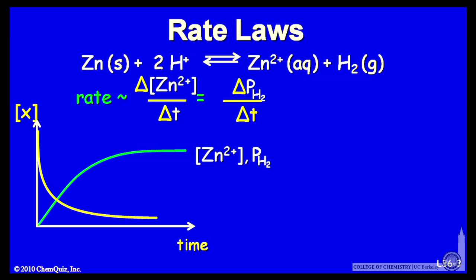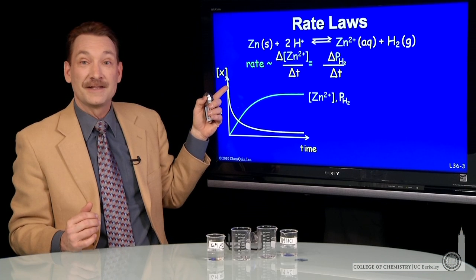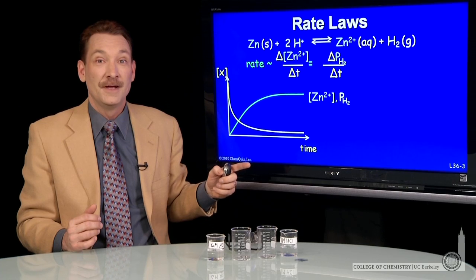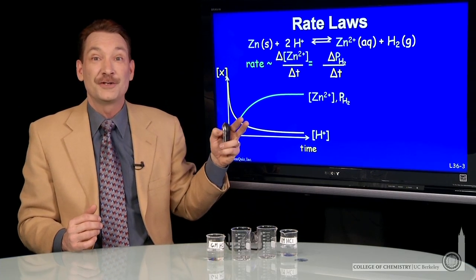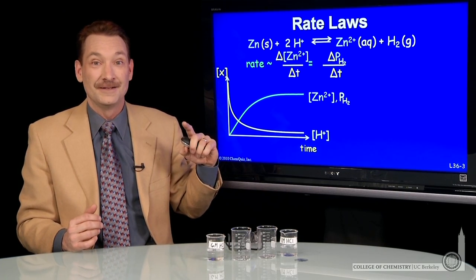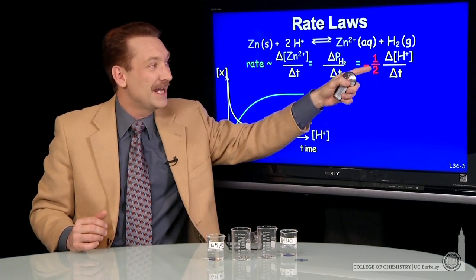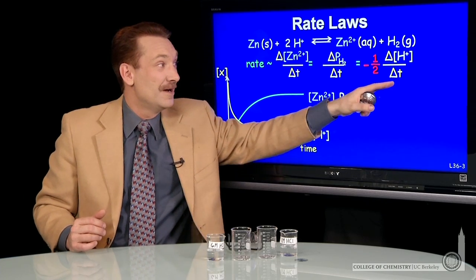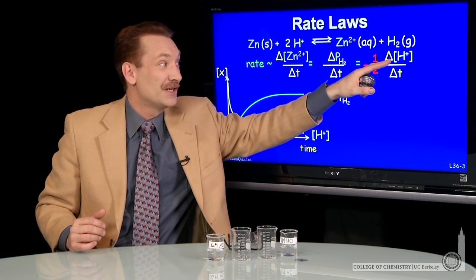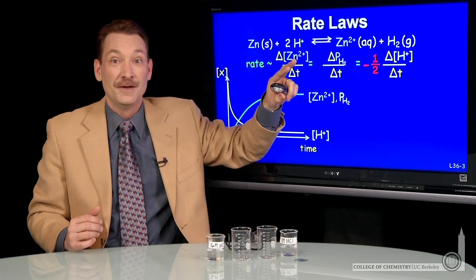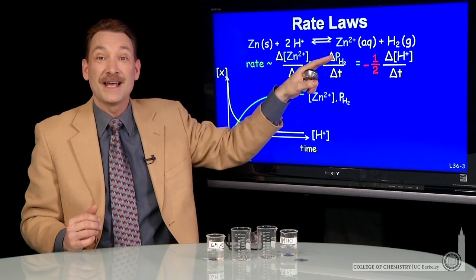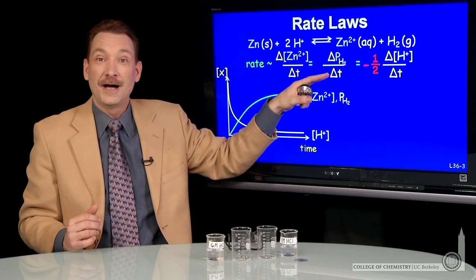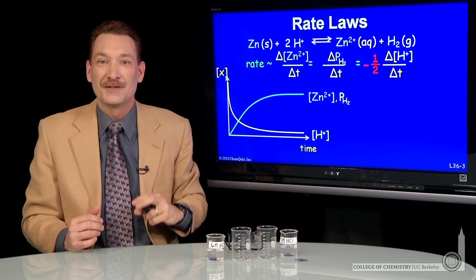Now, the hydrogen gas and the zinc ions appear over time. The hydrogen ions would disappear over time, so they would start at some high concentration and disappear. So if I cast the rate in terms of the hydrogen ions, then I would need two things: I'd need a negative sign, and there is a stoichiometry. This rate defined in terms of the change in concentration of hydrogen ions over time would be twice as fast as the partial pressure of hydrogen gas over time. So I have to keep track of that.